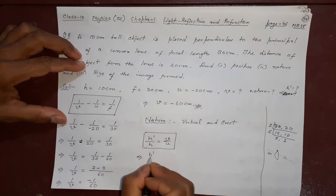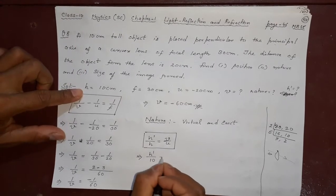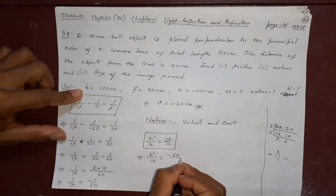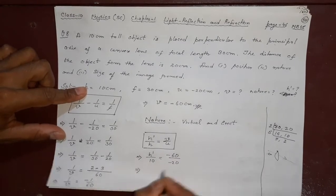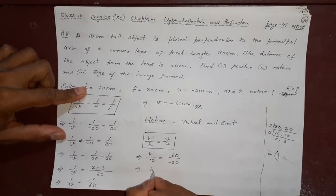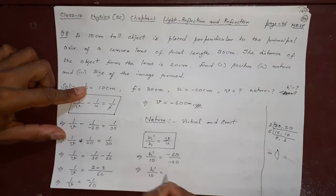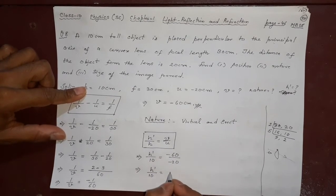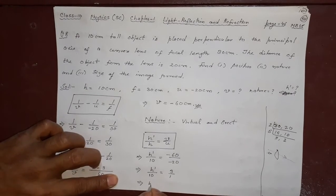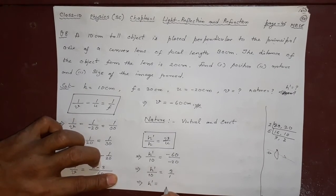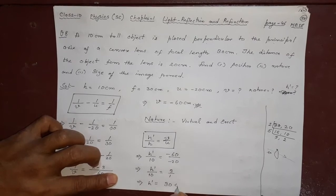Magnification formula, what is h dash, we do not know. What is h, 10. What is v, minus 60. What is u, minus 20. h dash by 10 equal to, minus and minus cancel, 3 by 1. Cross multiply, h dash into 1 is h dash, 10, 3 is 30 centimeter.